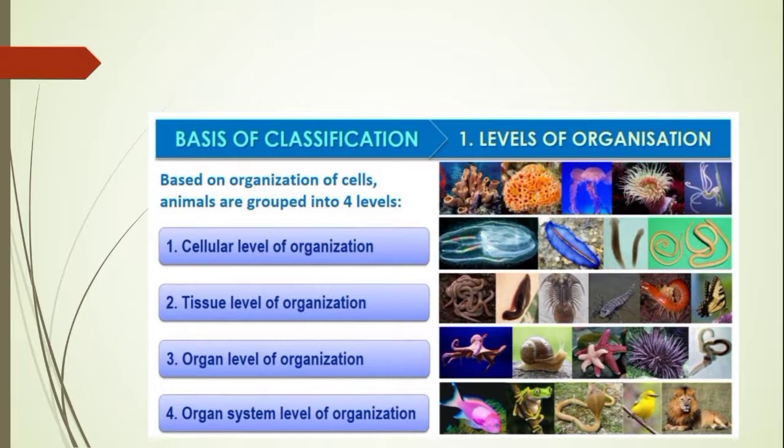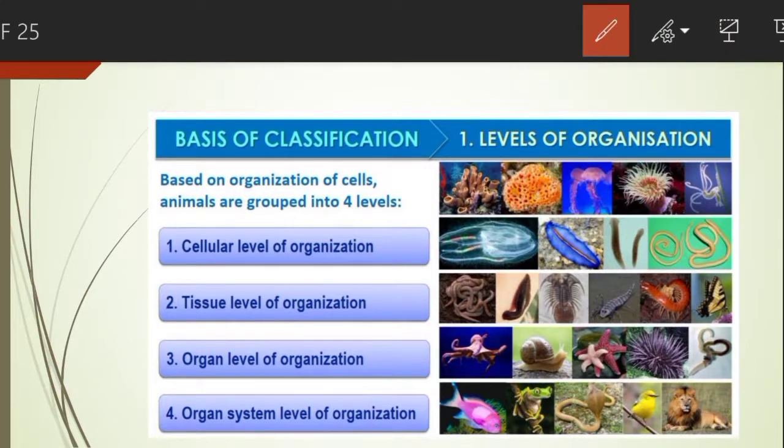Let us start with the levels of organization. All members of kingdom Animalia are multicellular, heterotrophic, and eukaryotes — eukaryotes means they have a well-defined nuclear membrane. But all of them do not exhibit the same pattern of organization of cells. The animal body shows four basic plans: cellular level, tissue level, organ level, and organ system level of organization.